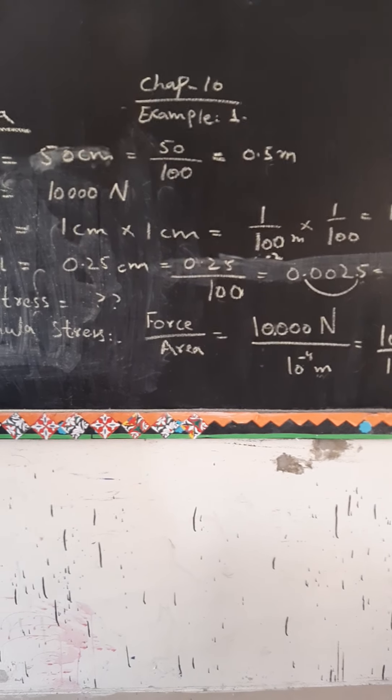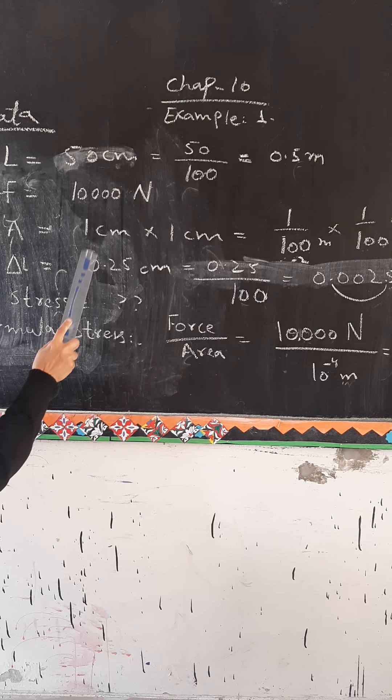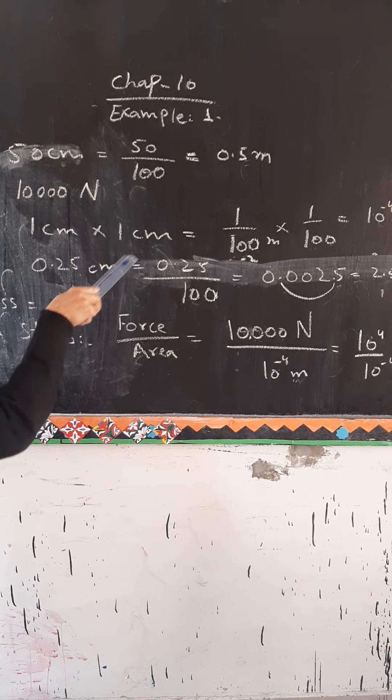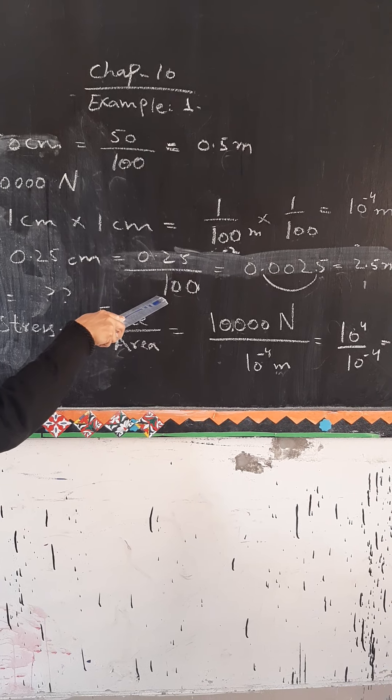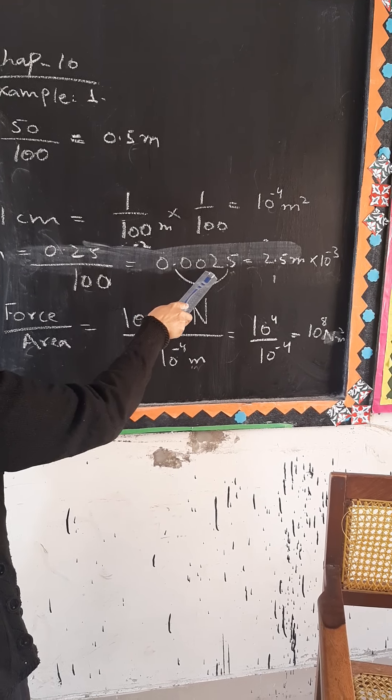We have a change in length. Change in length is 0.25 centimeter. We have a change of 0.25 in 100 centimeters, so the answer is 0.0025.